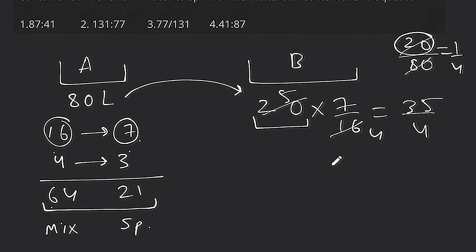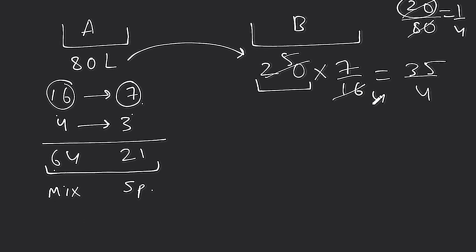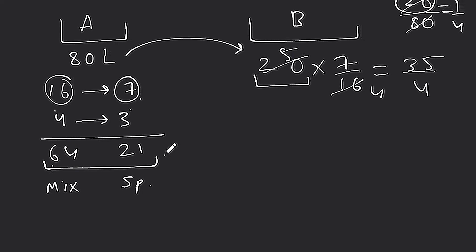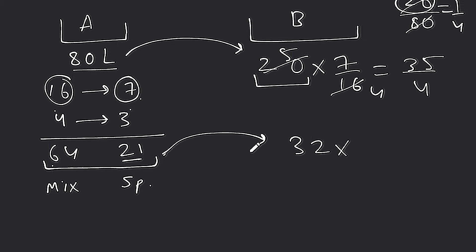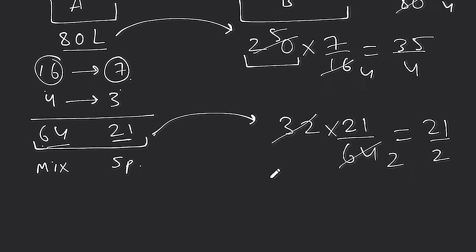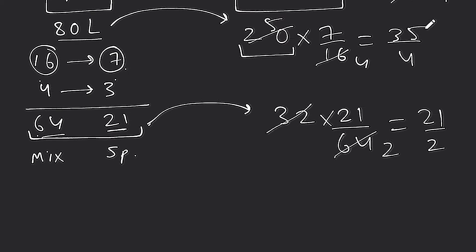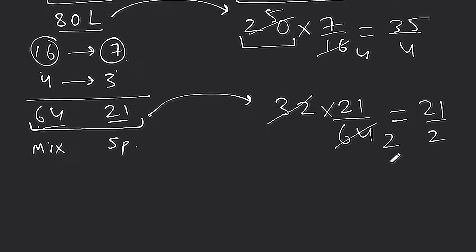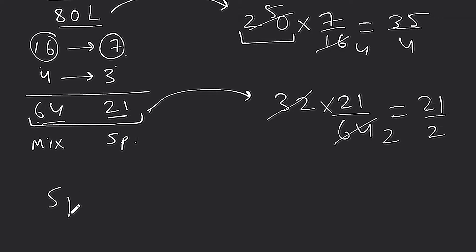Now 32 liters of mixture is transferred to container B. The total mixture in container A is 80 liters, and spirit is 21 out of 64. So spirit in 32 liters transferred is 21/64 × 32 = 21 by 2. This 21 by 2 is the spirit going into container B from the second transfer.